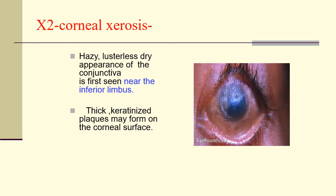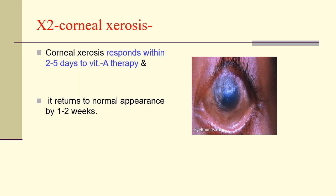X2 is corneal xerosis. The earliest change in the cornea is punctate keratopathy, which begins in the lower nasal quadrant, followed by a hazy, lusterless, dry appearance of the cornea seen near the inferior limbus. Thick keratinized plaques may form on the corneal surface. Corneal xerosis responds within 2–5 days to vitamin A therapy and returns to normal appearance by 1–2 weeks. According to WHO classification, the X2 stage is also reversible — vitamin A deficiency is preventable and, at this stage, reversible with timely treatment.